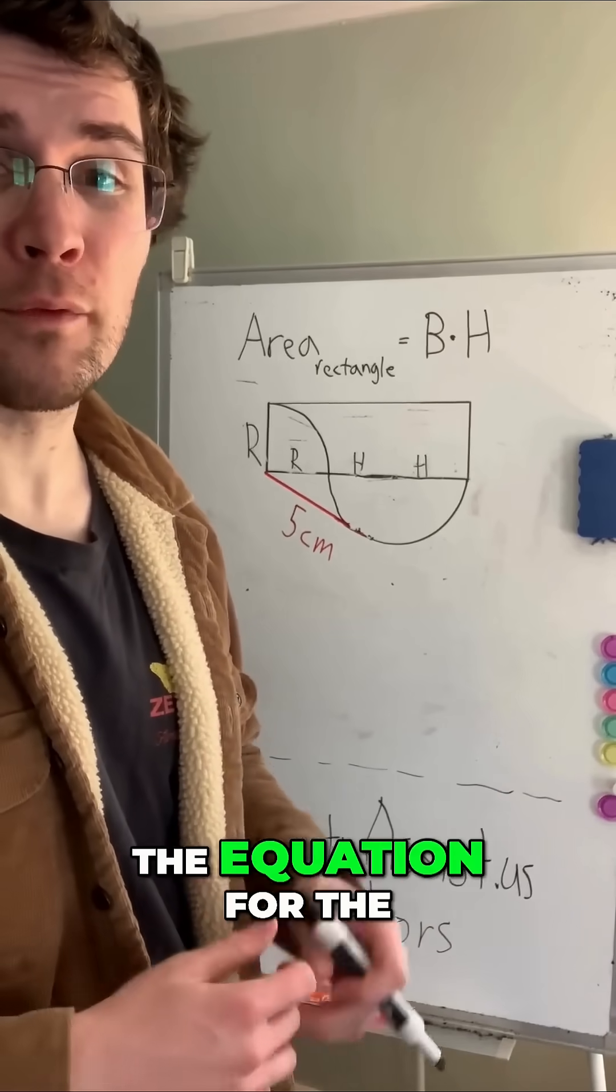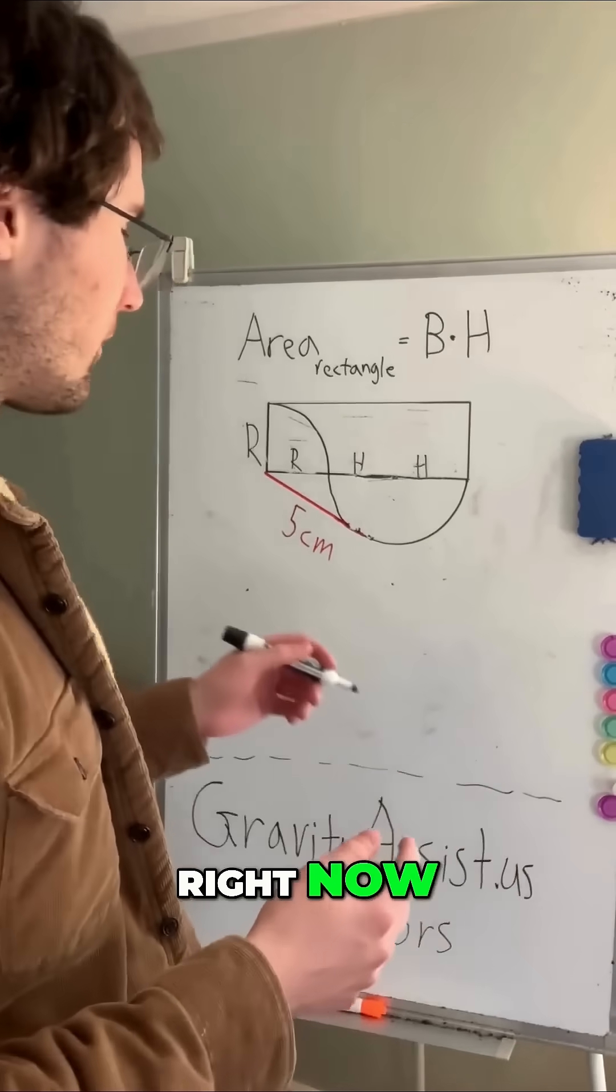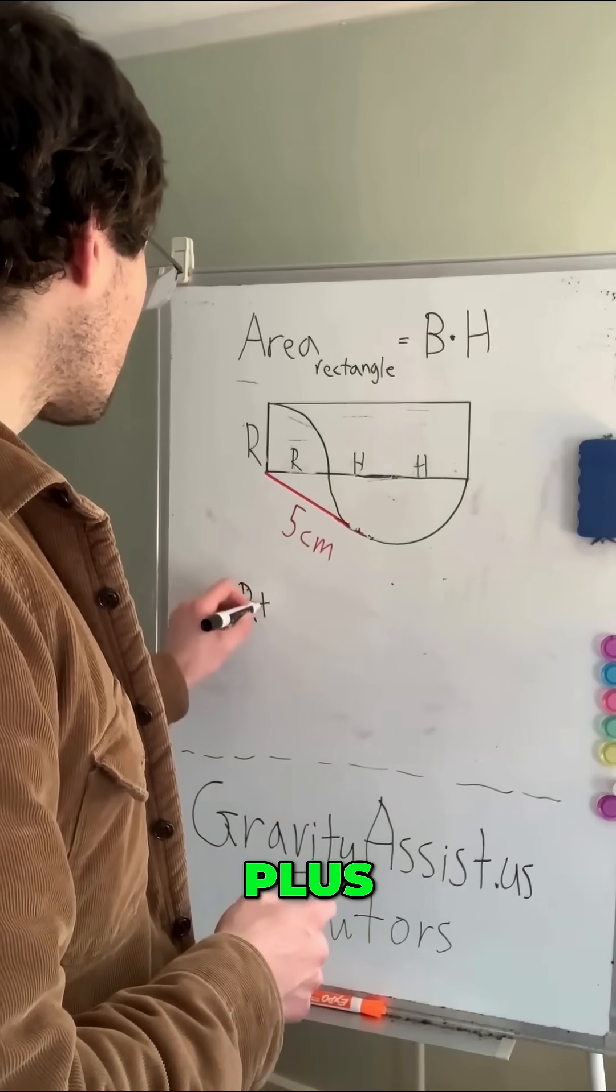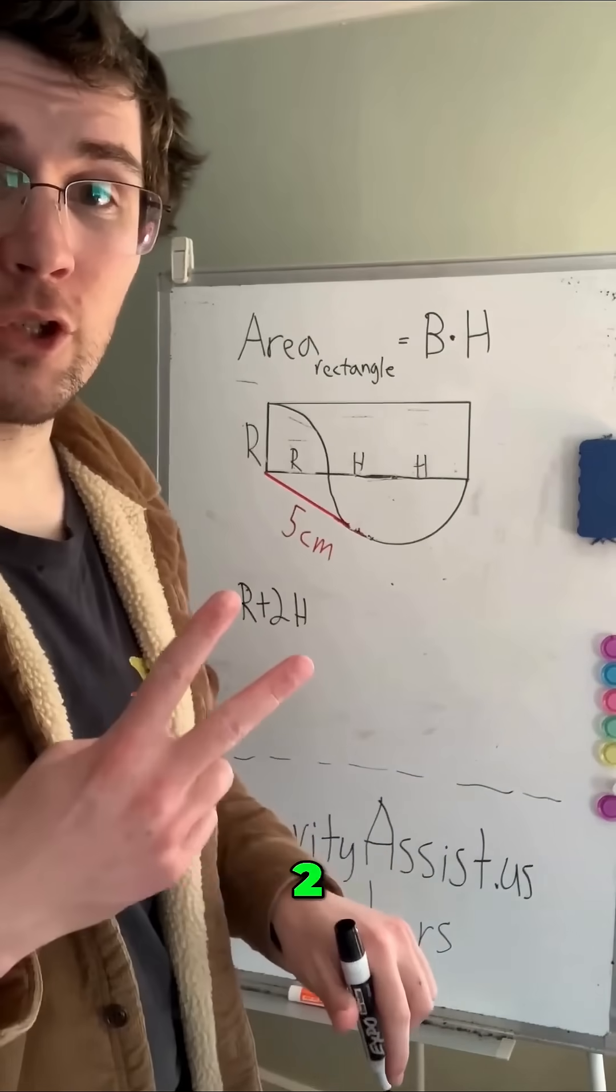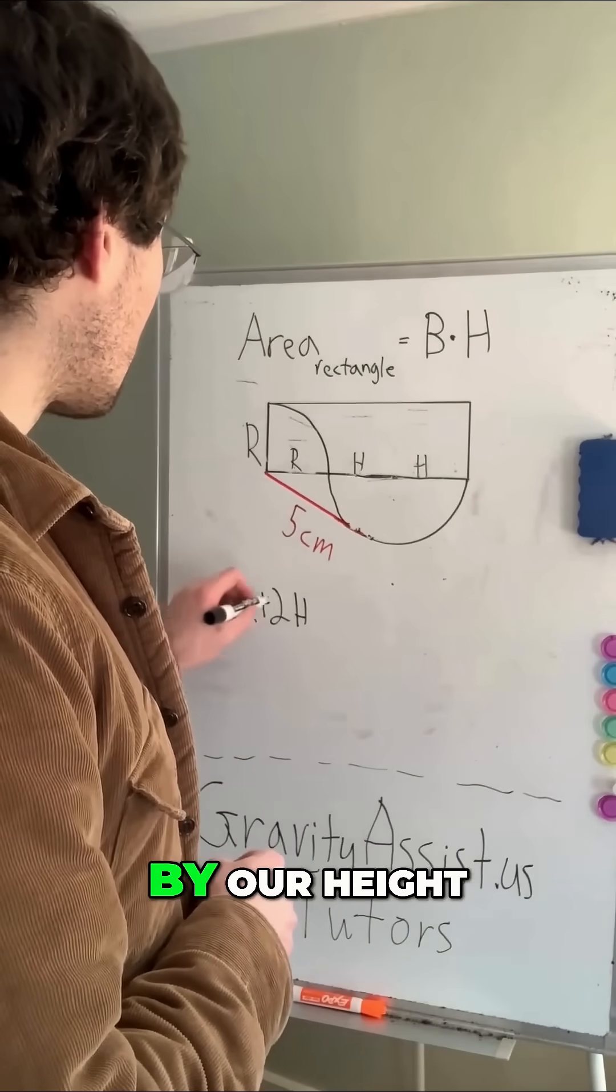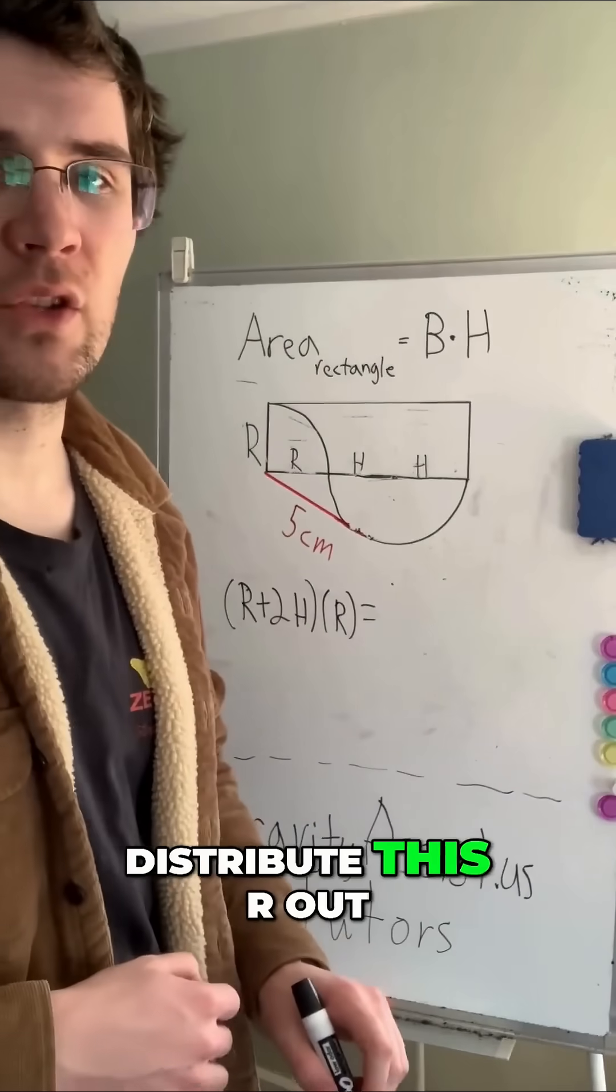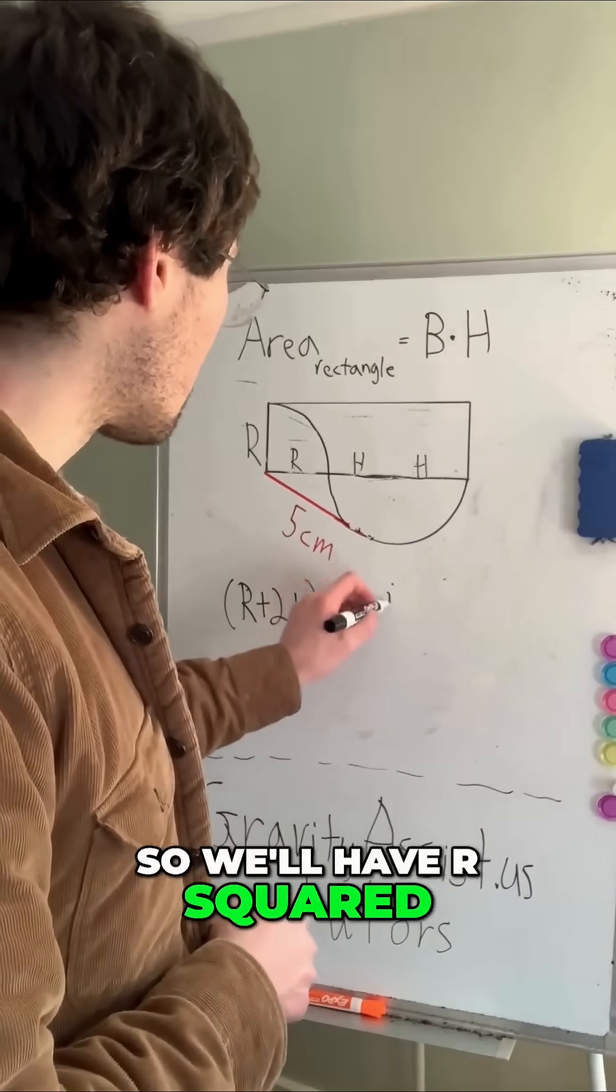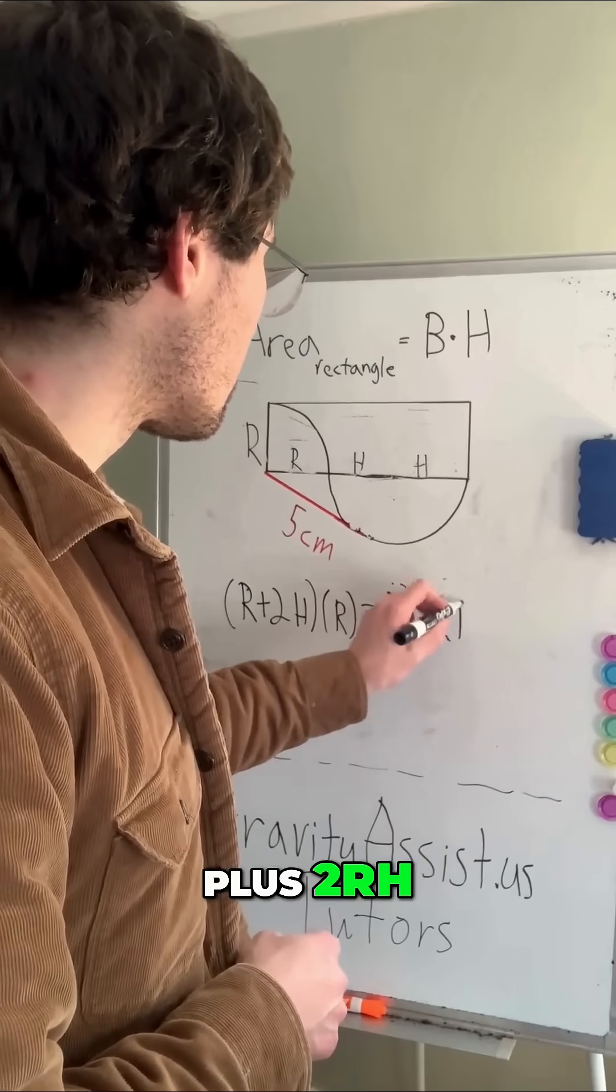Let's set up the equation for the area of our rectangle right now. We'll have r plus 2h, not just one, two. We're going to multiply that by our height, which is r. Then we'll distribute this r out, so we'll have r squared plus 2rh.